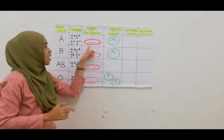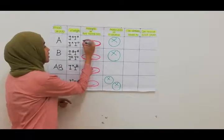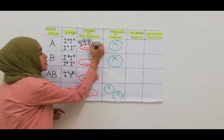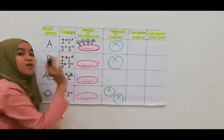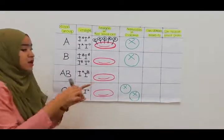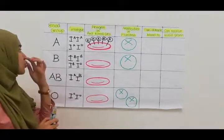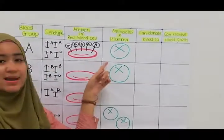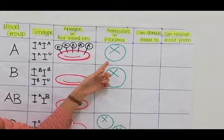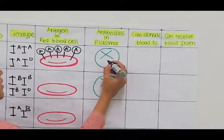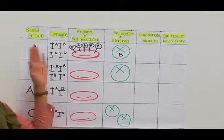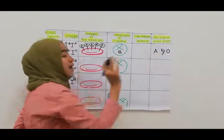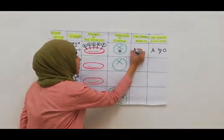This is the red blood cell. At the surface of the red blood cell, there will be antigen A — what I draw here is antigen A, located at the surface of the red blood cell. So the antigen is the marker to determine the blood group. Blood group A will have anti-B antibody in their blood plasma. That's why blood group A people can only receive blood from A and O, and can donate blood to A and AB.